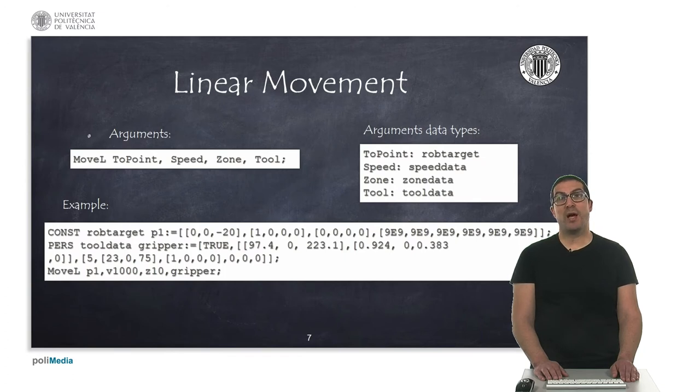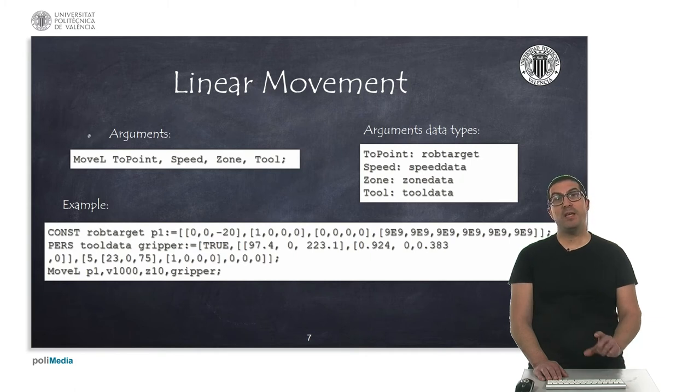The MoveL instruction has exactly the same arguments as the MoveJ instruction, but in this case it allows moving the robot given a target with coordinated linear movement. Again, we need to indicate the speed, the zone, and tool data to be used. This instruction can be interchanged with the MoveJ instruction easily because the arguments are exactly the same.